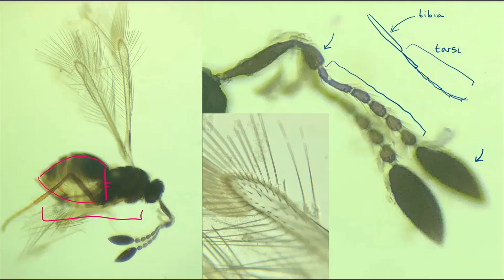From there, I need to examine the segmentation of the tarsi — the apical segments of the legs, attached to the body by the tibia, the femur, and two small segments: the trochanter and the coxa. As you can see in the diagram in the top right, my specimen has five segments of the tarsi, and then claws at the end.